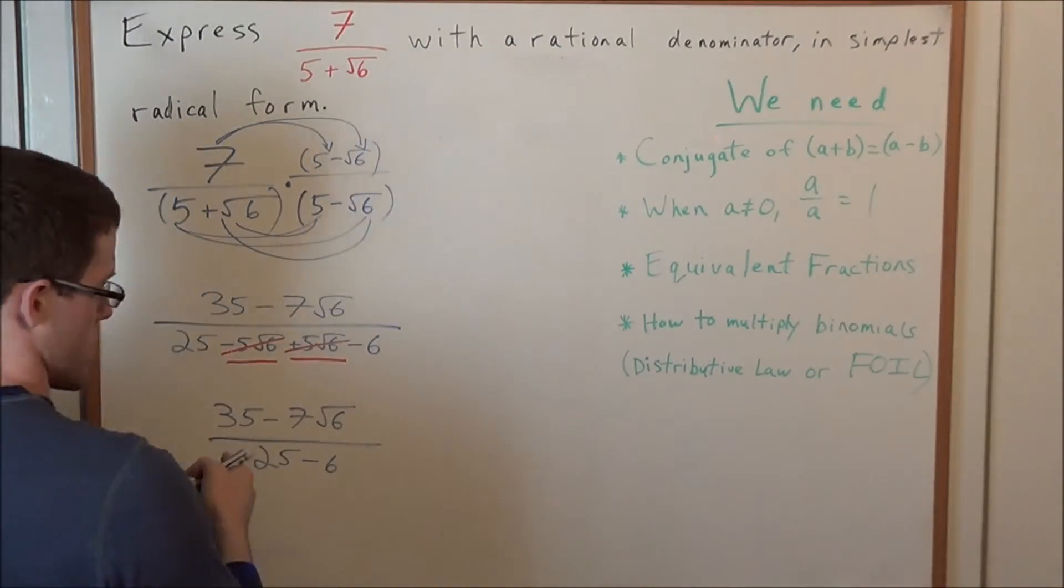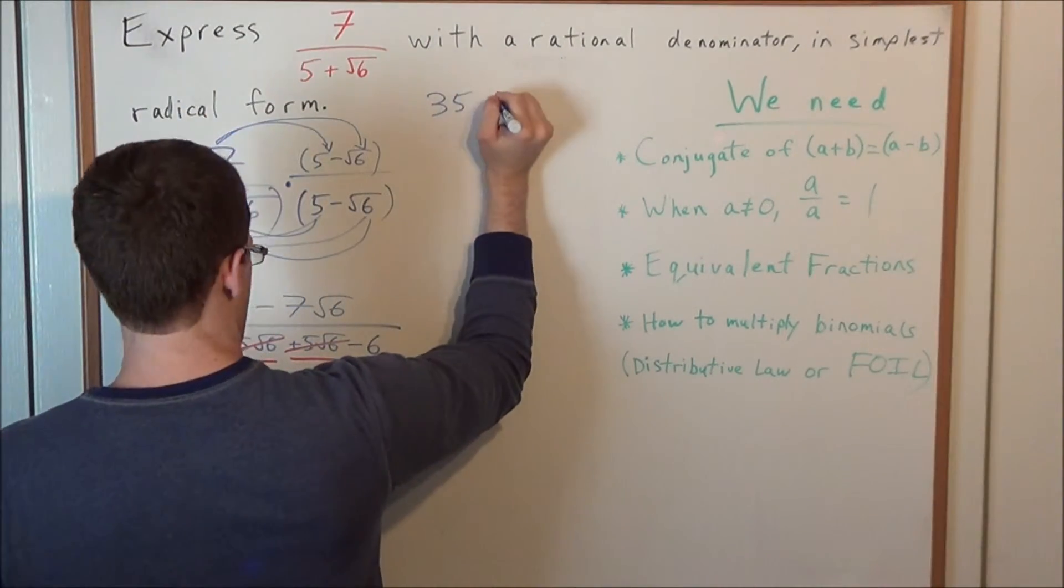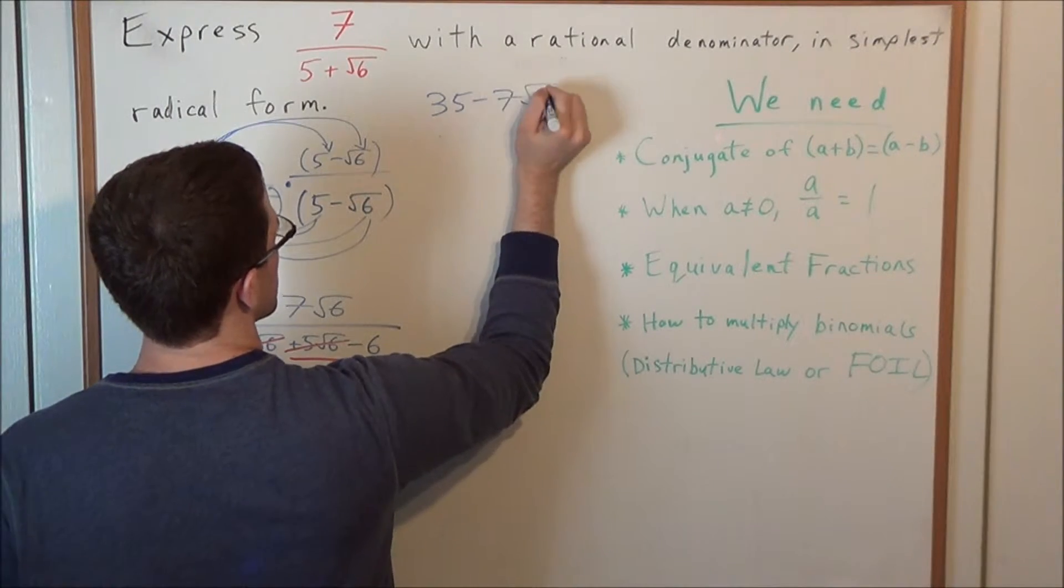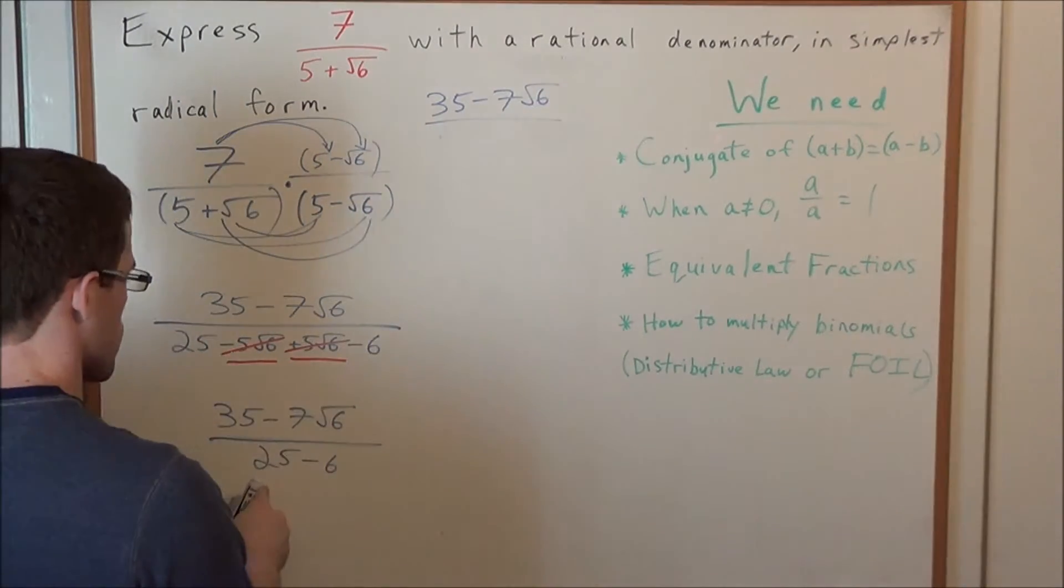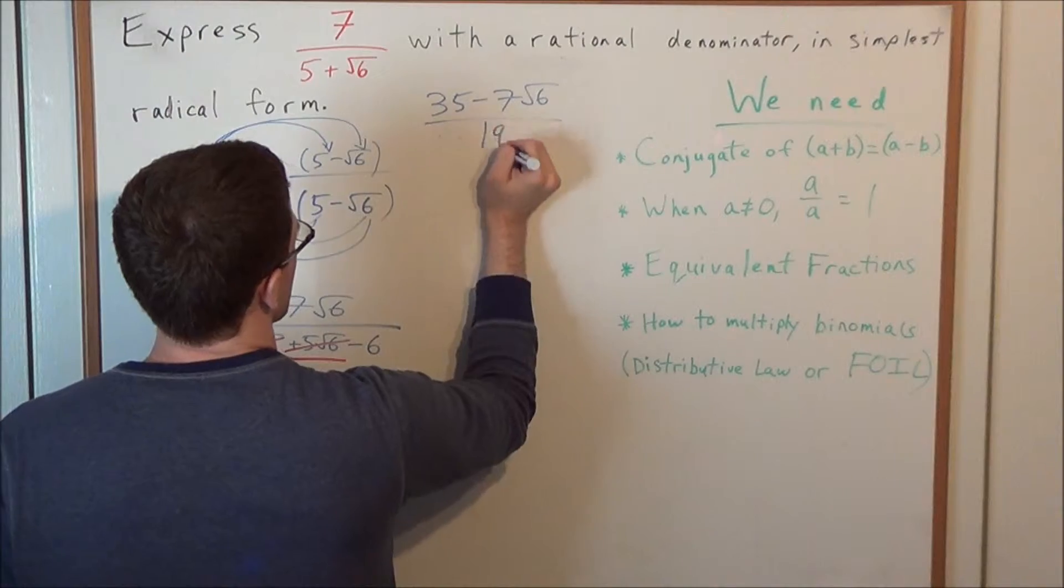We have, as our final answer, 35 minus 7 radical 6 divided by 25 minus 6, which is 19.